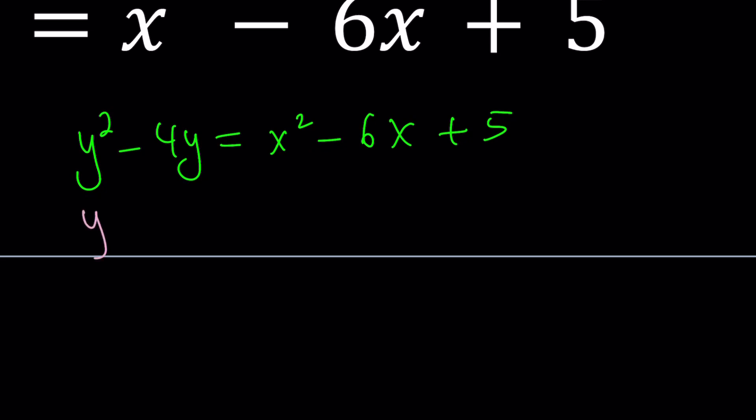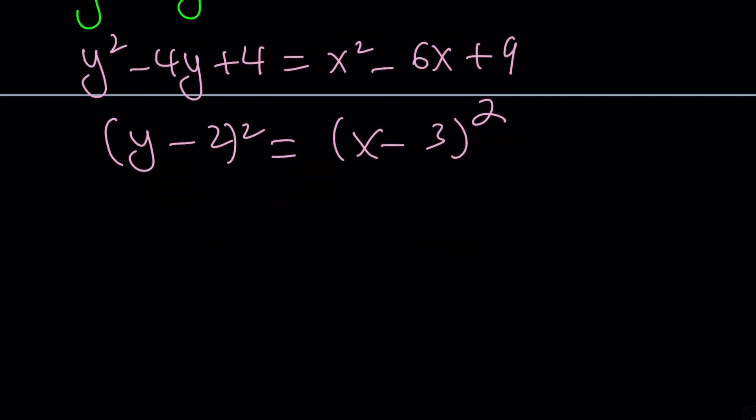We're going to add 4 to the left-hand side, because that'll make y minus 2 squared. But adding 4 on the right-hand side is also a good thing, because that also gives us a perfect square. What if it didn't? Then we will just proceed with what we have. Obviously, our goal is to complete the square on at least one side. And we were able to do it on both sides, which is nice.